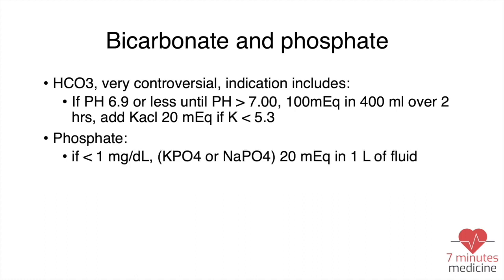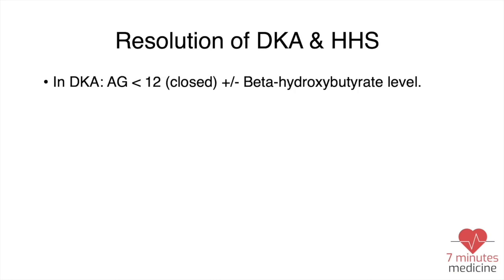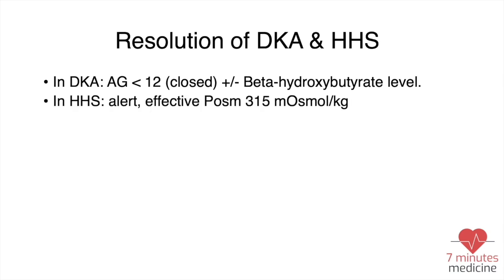For phosphorus, if it is less than 1, you must give phosphorus replacement to avoid muscle weakness. Resolution of DKA occurs once the anion gap is closed, the patient can eat, and the metabolic acidosis has decreased. For HHS, resolution is when plasma osmolality is less than 315 and the patient is alert and able to eat — the ability to eat is an important point not to overlook.